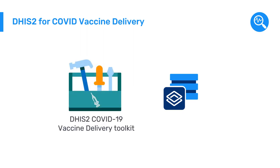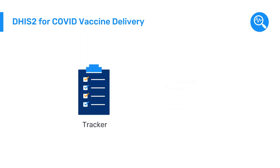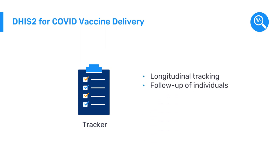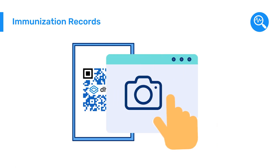Others used the DHIS-2 COVID-19 Vaccine Delivery Toolkit, installing the tracker metadata package for individualized patient registration to track each vaccination case over time. This DHIS-2 tracker program allows, among other features, longitudinal tracking, follow-up of the individuals, and the strengthening of vaccine safety surveillance. Patient records in this system can be searched and updated in various ways, including by scanning QR codes.